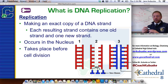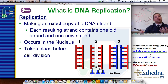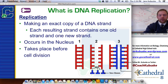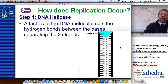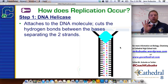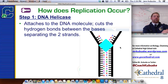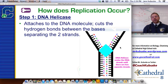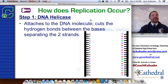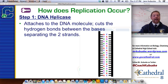DNA replication obviously occurs in the nucleus — that's where our DNA is contained — and it takes place before cell division. That's the reason we need DNA replication: we need to make more DNA in order to make more cells. So how does replication occur? There are actually several steps, but we're going to learn about three here in Honors Biology. The first step uses something called DNA helicase.